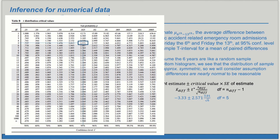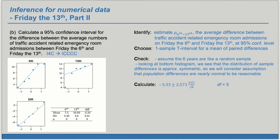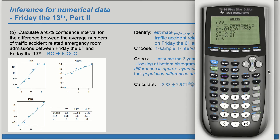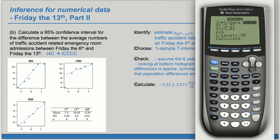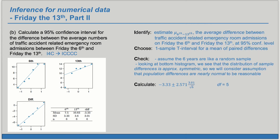We plug in t-star equals 2.571 and we're ready to evaluate our confidence interval. We can also use a calculator shortcut: go to STAT, TESTS, T-Interval. Our summary statistics are already entered, so we calculate, and this gives us the lower and upper bound of the interval.